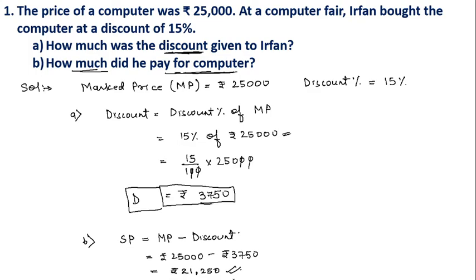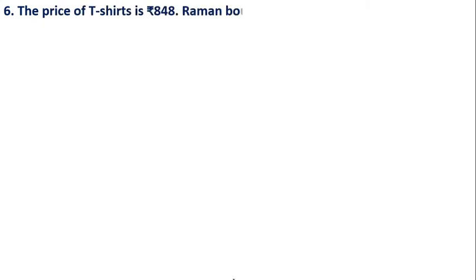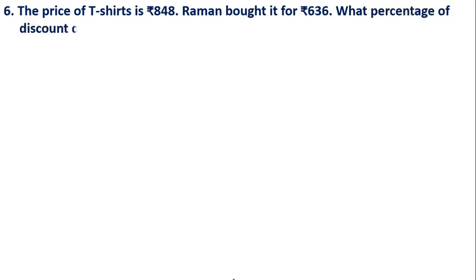Now let's solve Question 6 of Exercise 11.2. The price of a T-shirt is ₹848. Raman bought it for ₹636. What percent of discount did he get? In this question, the marked price is ₹848 and the selling price is ₹636.